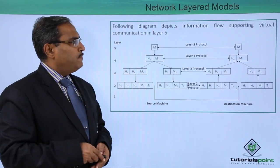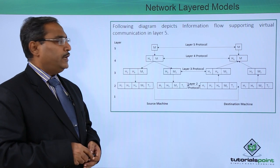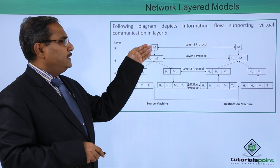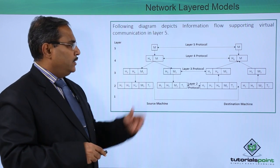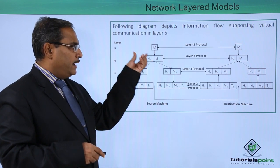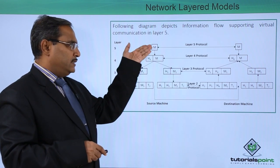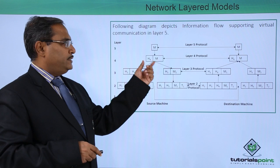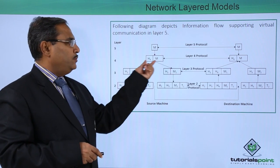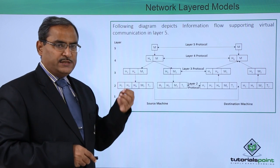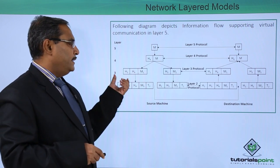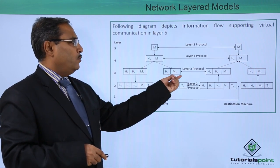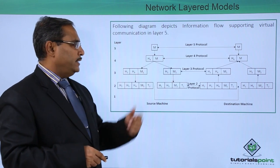The following diagram depicts information flow supporting virtual communication in layer 5. Layer 5 on host 1 tries to communicate with host 2 through the intermediate layers. At layer 4, the message is added with a header part — H4 followed by M (message). At layer 3, another additional header is added: H3 along with M2, where M2 consists of the previous layer's content.